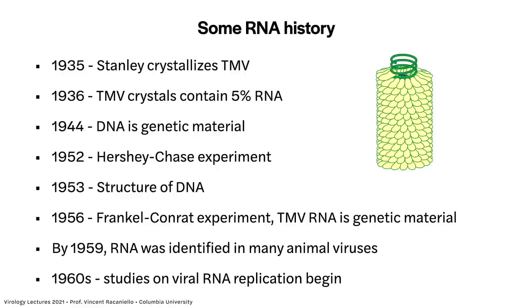1935 — tobacco mosaic virus, remember the first virus discovered in the end of the 1800s? In 1935, a scientist named Stanley crystallized it. The crystals are made of protein and they have 5% RNA in them. In 1936, Stanley said it's a contaminant, it's irrelevant. He thought the protein was infectious, which now we know happens for other things called prions. But this was a virus, and the RNA was what conferred infectivity.